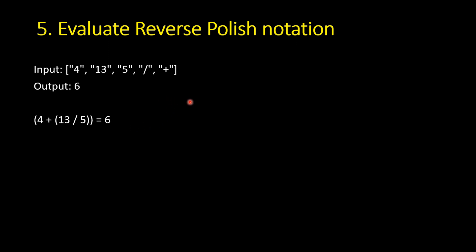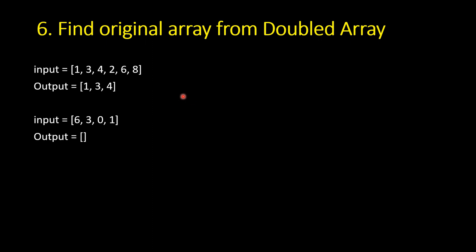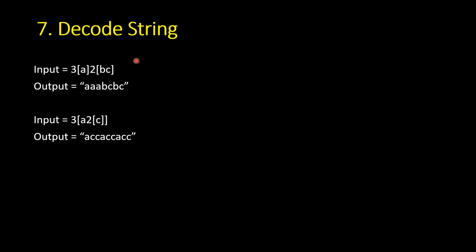The next problem is finding the original array from a doubled array. Given an original array like [1, 3, 4], you also add the double of each element — so 2, 6, 8 — giving [1, 3, 4, 2, 6, 8]. From this input you have to find the original array. If it's not possible, return an empty array. For example, [6, 3, 0, 1] is invalid because no consistent original array can produce it.